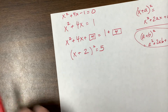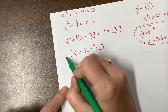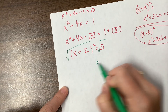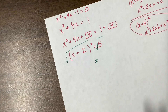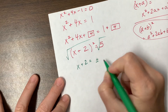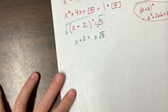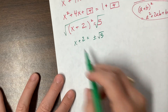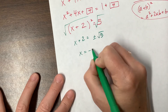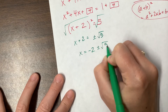Now I'm ready to do the cheer: square root, square root, plus, minus. This gives x plus 2 equals plus or minus root 5. Subtracting 2 from both sides: x equals negative 2 plus or minus root 5.